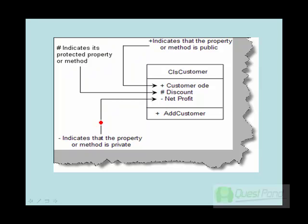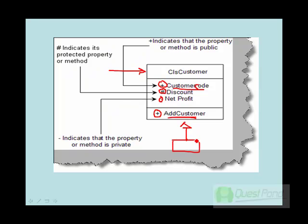Another important part of class diagrams is how the entities — either properties or methods — are exposed to the external world. This is represented using the plus sign, the hash, and the negative sign. The plus sign indicates that any client who creates an object of this class will be able to see the property or method, as it is public. The hash sign indicates a protected property — only classes that inherit from this class will be able to view those properties and methods.